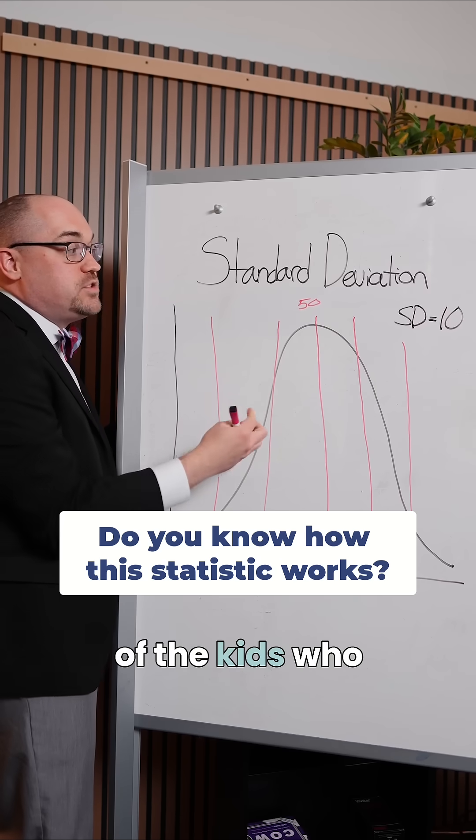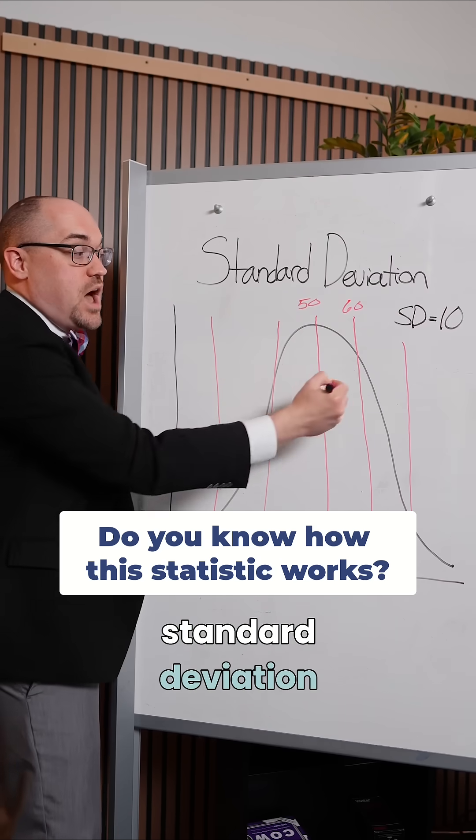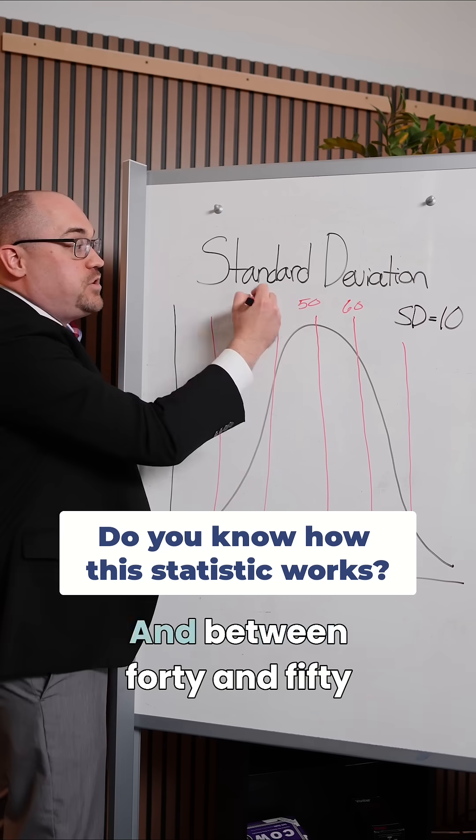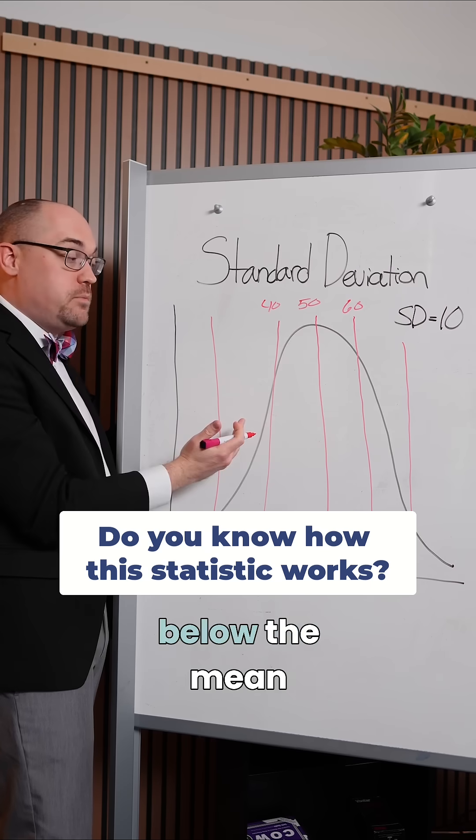That means that all of the kids who score between 50 and 60 are within one standard deviation above the mean. And between 40 and 50, those kids are one standard deviation below the mean.